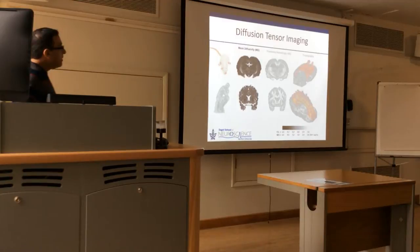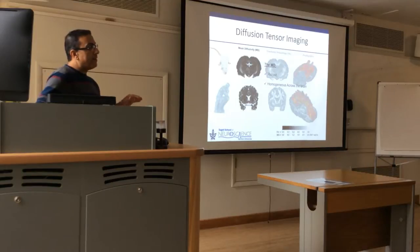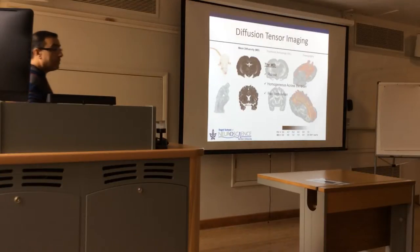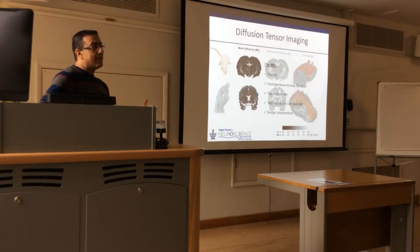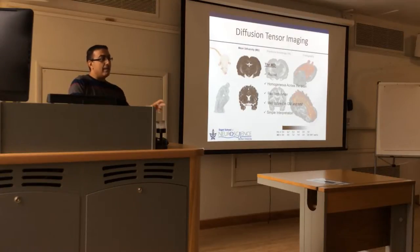We used mean diffusivity as a connectome marker — it is very robust, homogenous across the brain, which gives advantages in image analysis, registration, and normalization. Acquisition is fast — you can finish within a minute. It is well defined in gray matter and white matter. The interpretation is simple: the denser the tissue, the lower the mean diffusivity. If you measure two conditions the same way and something happens to the mean diffusivity that you can track to a specific task, then you know the tissue became denser or less dense because of that task.